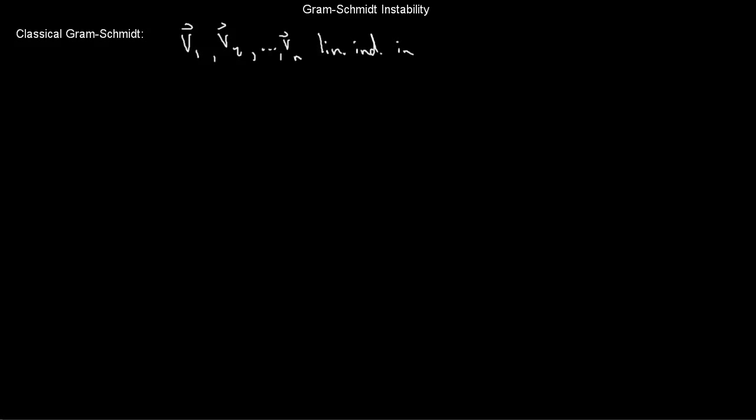Welcome back. Today I want to talk about instability in the Gram-Schmidt process, so first I should give you a rundown on the classical Gram-Schmidt. Suppose I have some vectors v1, v2, up to vn. These are linearly independent vectors in some vector space V, which I need to assume is an inner product space, like R^n, or a function space with the integral inner product.